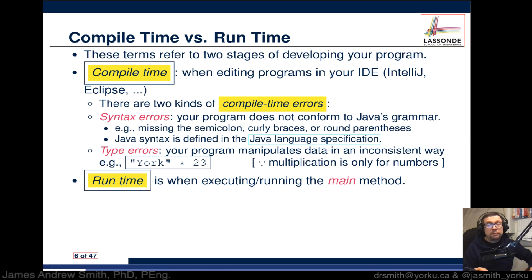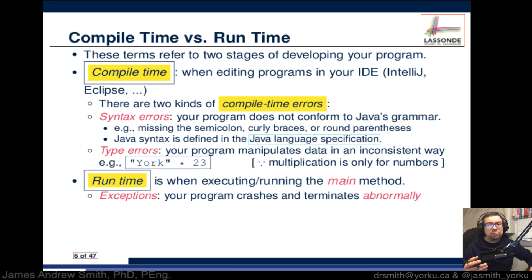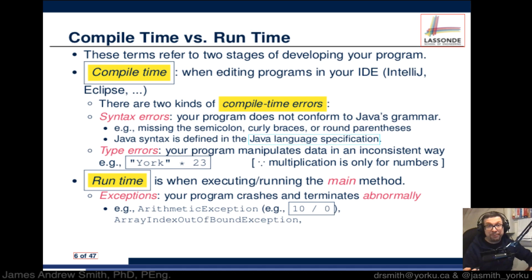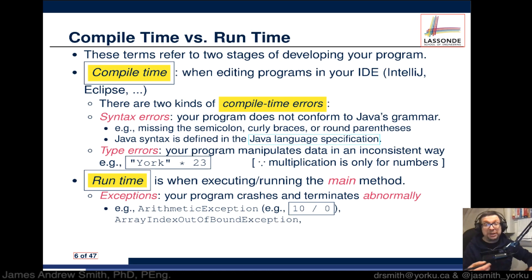Then there are runtime errors — what happens after your program compiles and the main method is executing line by line, and then something goes wrong. That's an error that occurs at runtime. We distinguish two things: exceptions, where your program crashes or terminates abnormally, such as dividing by zero causing an arithmetic exception, array indices out of bounds, or null pointer exceptions — all things you might not catch at compile time but that occur during execution.